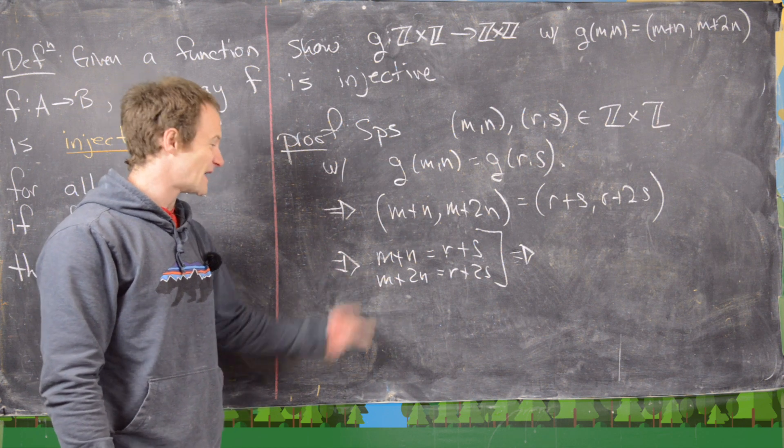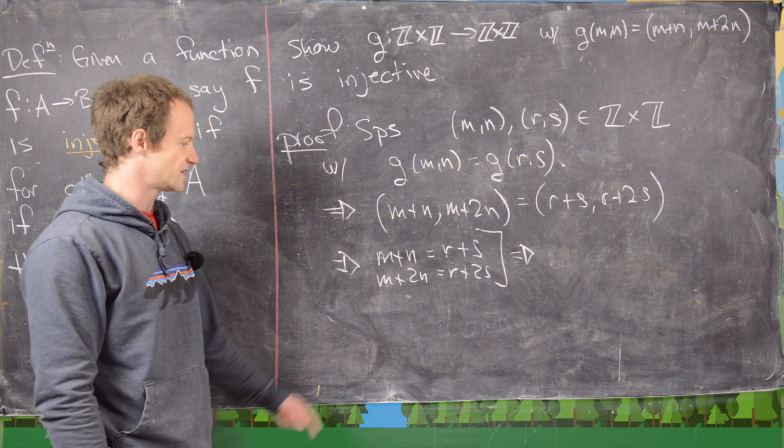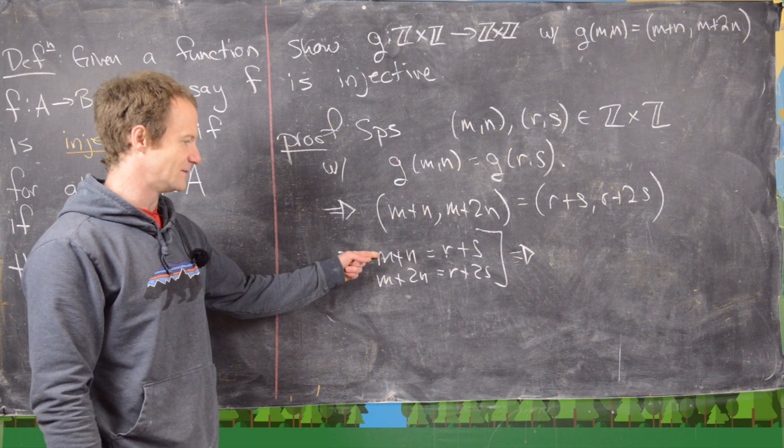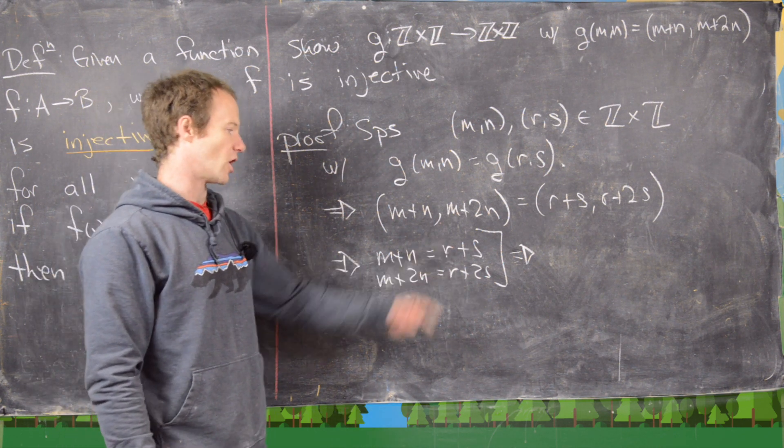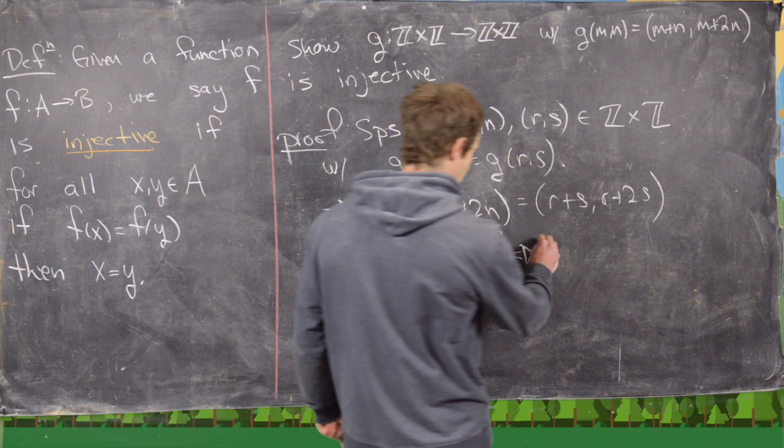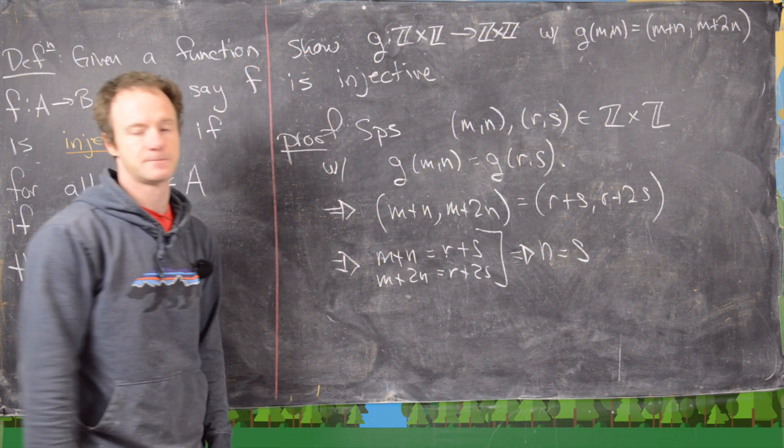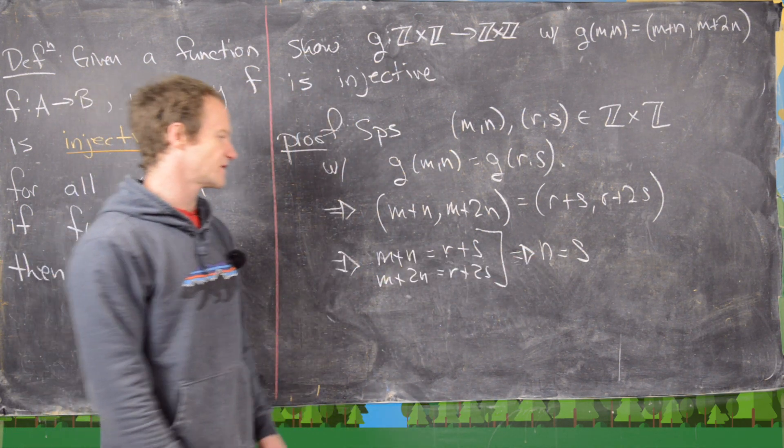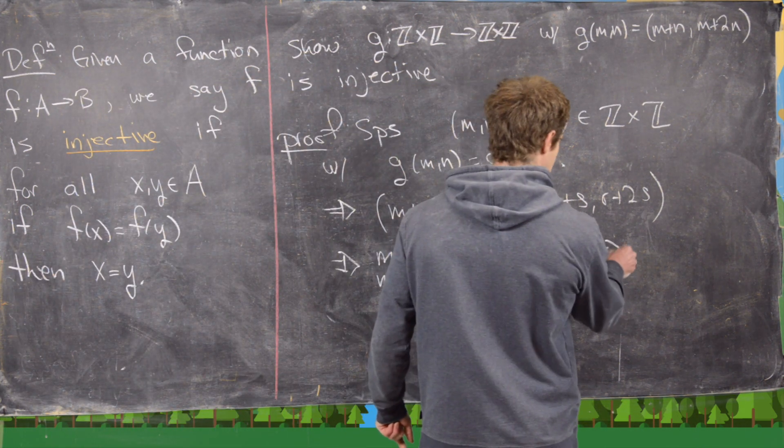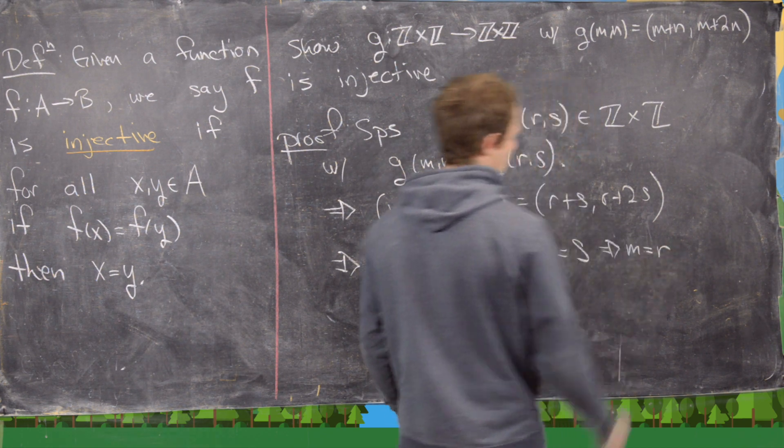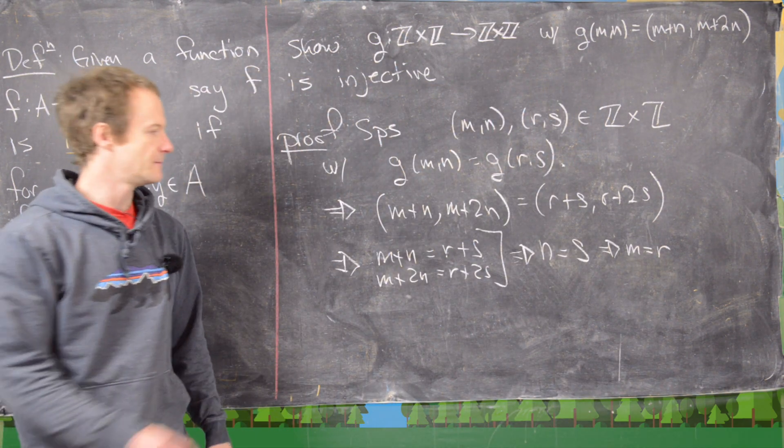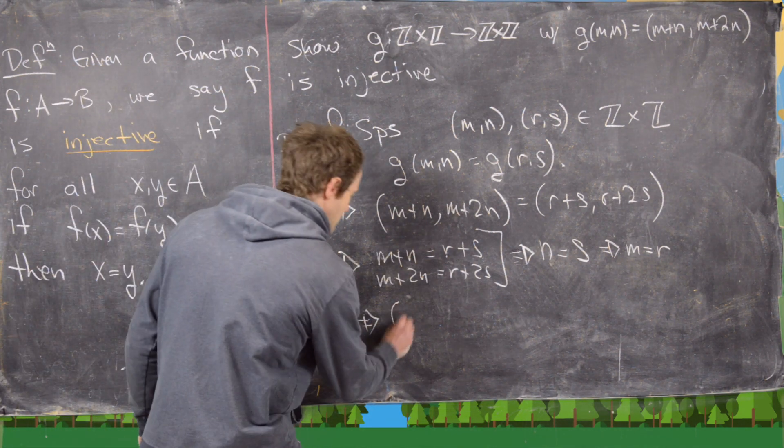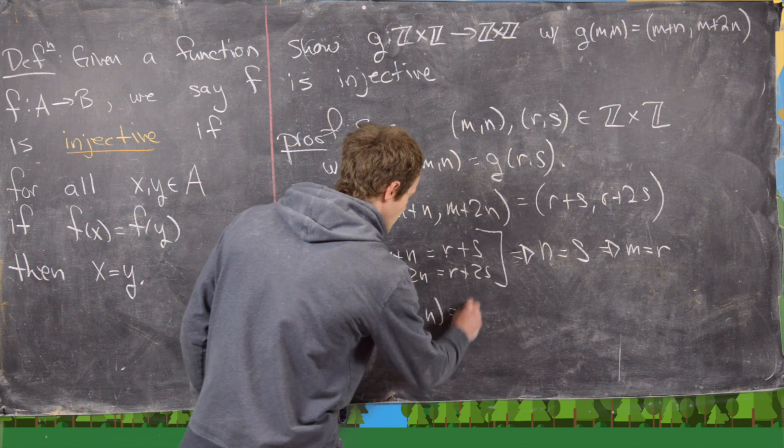But maybe the best way to do that is just by subtracting these two equations. So if we do the second equation minus the first equation, notice the m's will cancel here, the r's will cancel here, and that will immediately give us n equals s. And then notice plugging n equals s into this first equation will immediately give us m equals r.